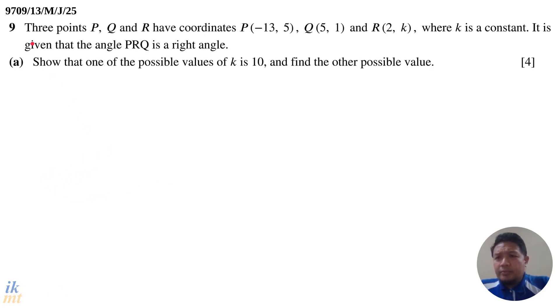Question 9: Three points P, Q and R have coordinates P(-13, 5), Q(5, 1) and R(2, k) where k is a constant. It is given that angle PRQ is a right angle. First part, part A, show that one of the possible values of k is 10 and find the other possible value. This is a showing question, so anything that you do that leads to finding the value of k being 10 or if you substitute k equals 10 into a valid equation and you get the equation to be true, that's one way to show that one of the possible values of k is 10.